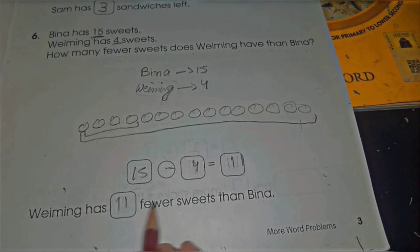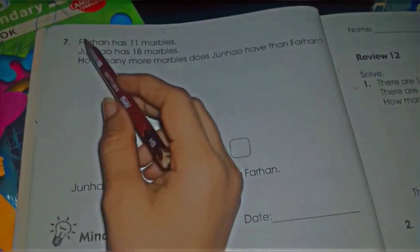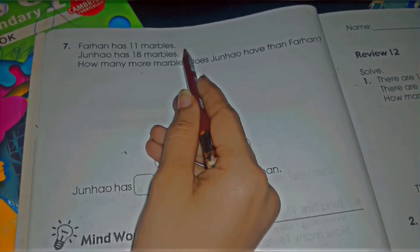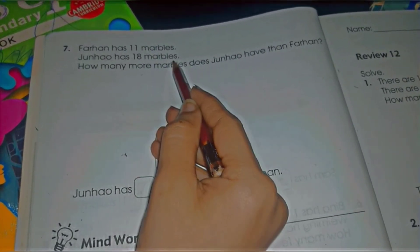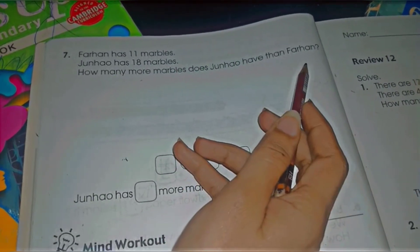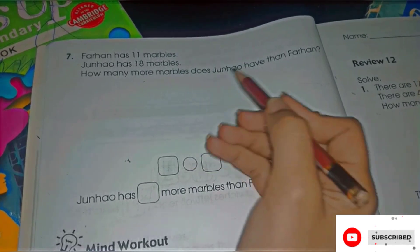Got it? Here is question number 7, which is: Farhan has 11 marbles, Janao has 18 marbles. How many more marbles does Janao have than Farhan? It means Janao has more marbles than Farhan.